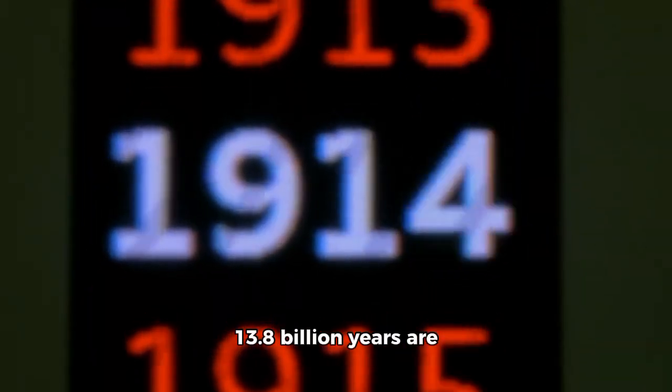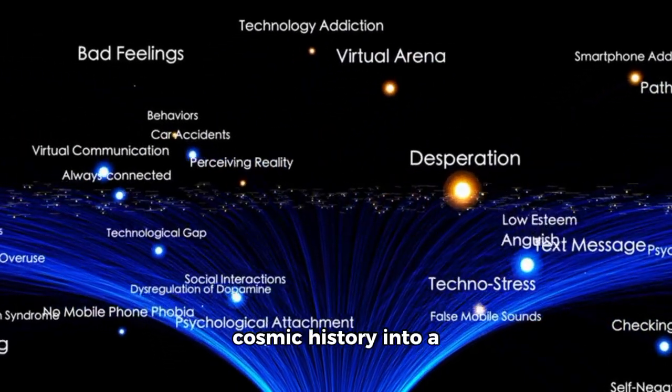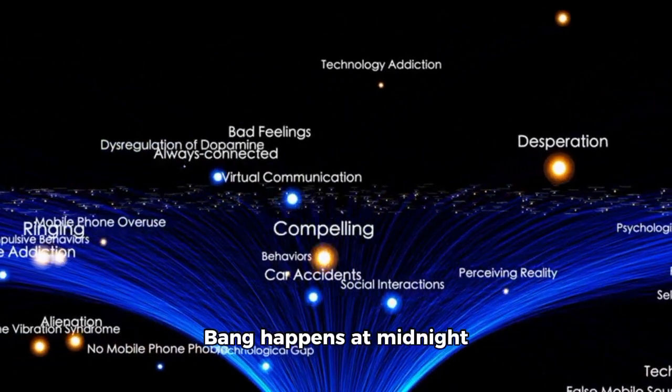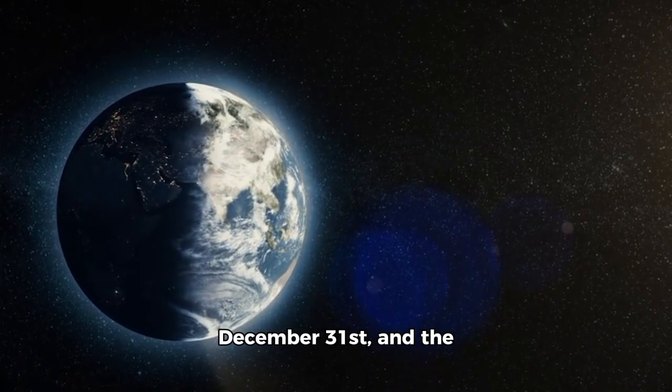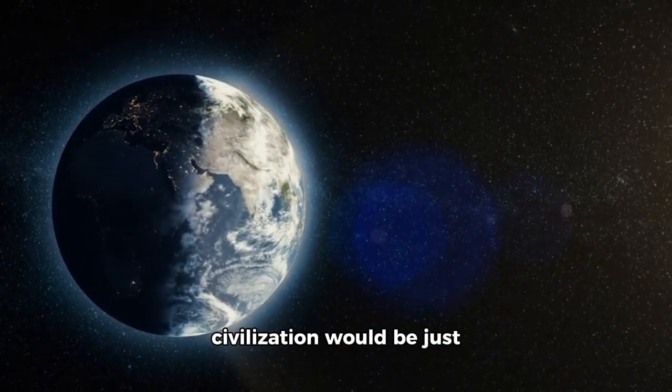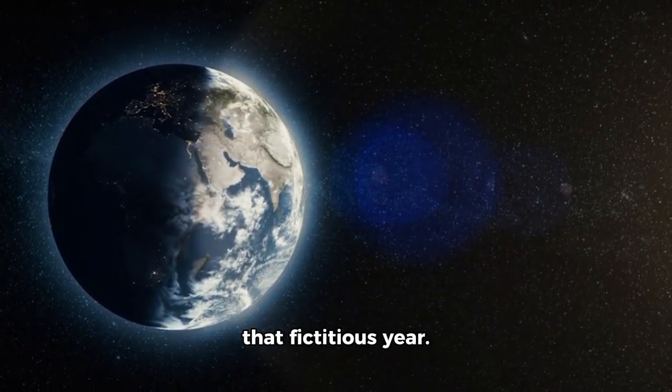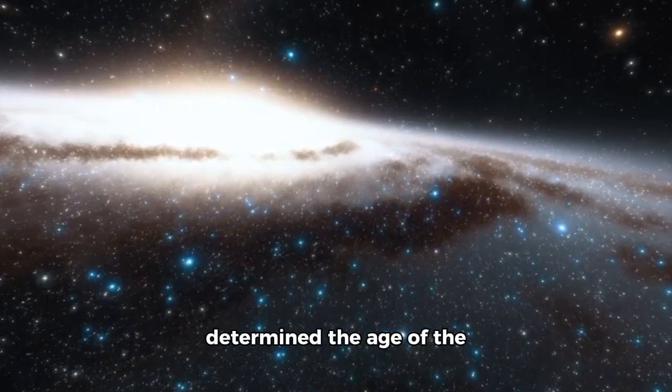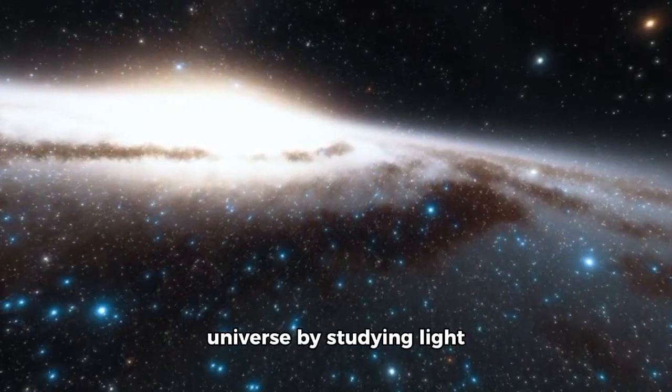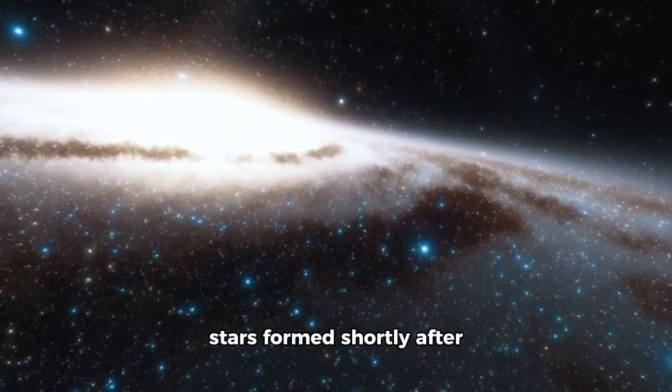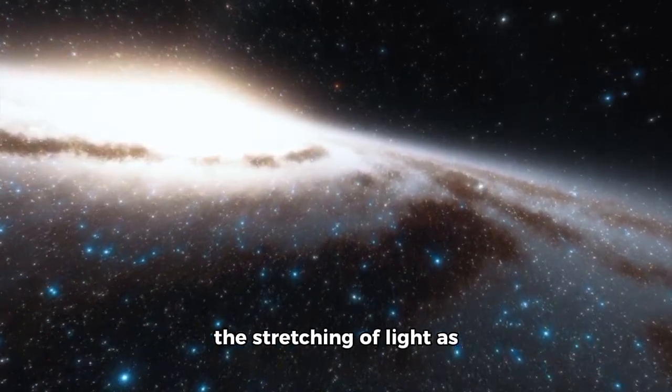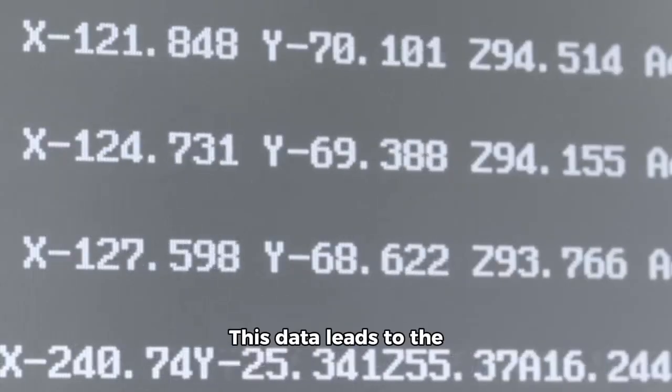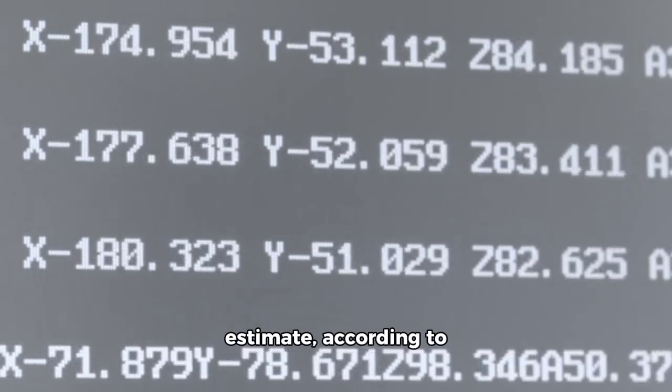Efforts to imagine that 13.8 billion years are not a small feat. Imagine compressing all of cosmic history into a single year where the Big Bang happens at midnight on January 1st. Earth wouldn't appear until the final hours of December 31st, and the entire span of human civilization would be just the last few seconds of that fictitious year. Astronomers have determined the age of the universe by studying light from incredibly distant stars formed shortly after the Big Bang and considering the influence of the redshift caused by the stretching of light as the universe expands.